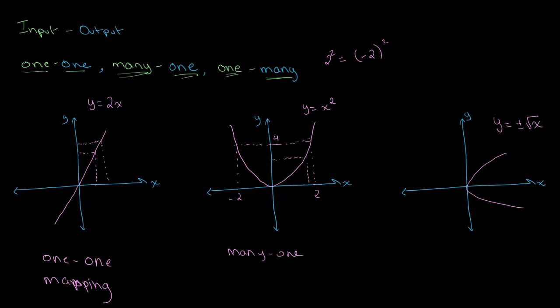Now let's look at the graph of y = ±√x. Over here we see that for each individual input value we receive two output or y values, and for each output or y value we receive only one input value. Therefore we can say that this graph shows one-many mapping, because for each one individual input value we receive many, or two, output values.